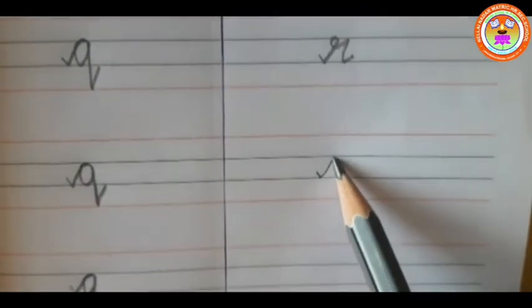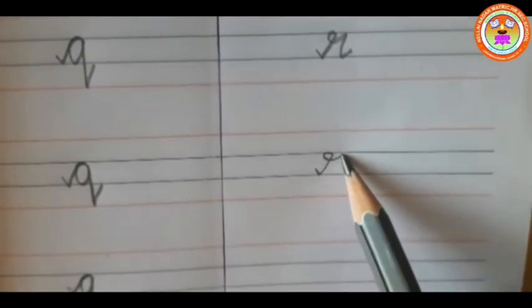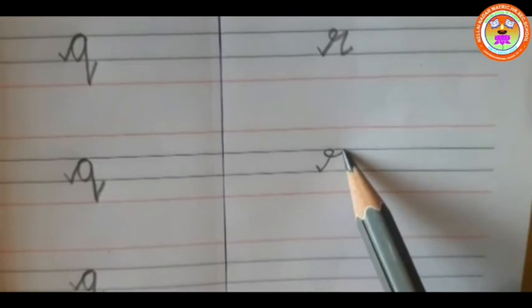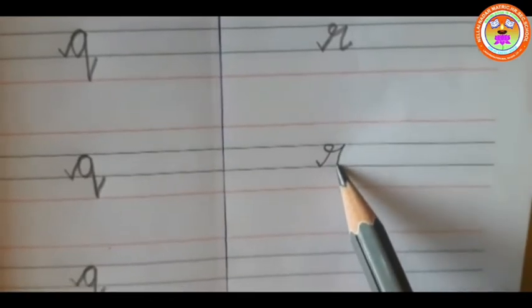Put a small tick, turn back, again come back to the first blue line, slanting line and take. This is R.